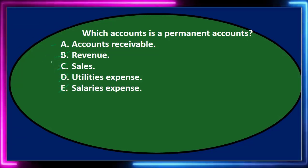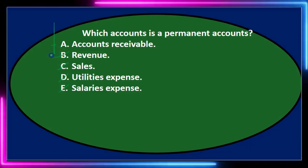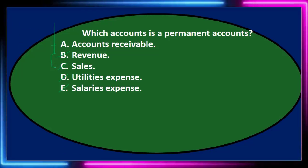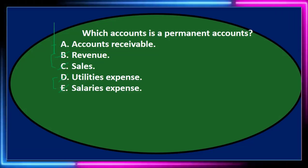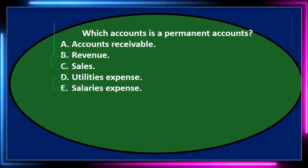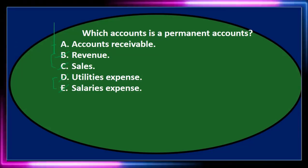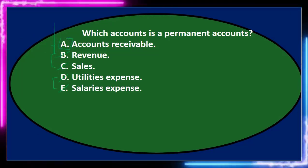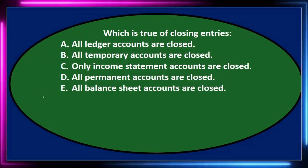Note that B and C are essentially the same thing — revenue and sales are pretty much the same, so it can't be both, which means it's probably neither. D and E are both expense-type accounts, and we can't have two expense accounts as the answer. That leaves us with A — accounts receivable. Which account is a permanent account? That is accounts receivable.